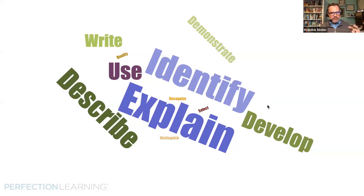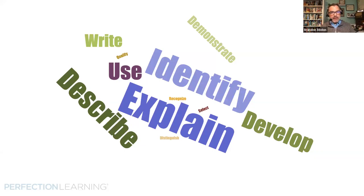Can anybody tell me what this is? It's a word cloud. But where did these words come from? These are from the CED — the course and exam description. I took the verbs from all of the skills for both courses, AP Language and AP Literature, and put them into a word cloud. 'Explain' is the biggest. Then we have identify, describe, develop, write, demonstrate, qualify, recognize, select, distinguish, and use.